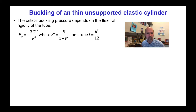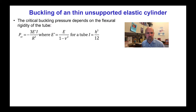E' is E over 1 minus ν squared, where ν is the Poisson ratio, and for a thin-walled tube the area moment of inertia I is h cubed over 12, where h is the wall thickness of the tube.